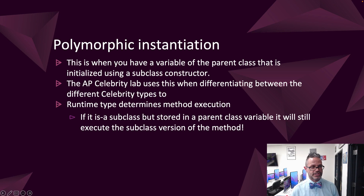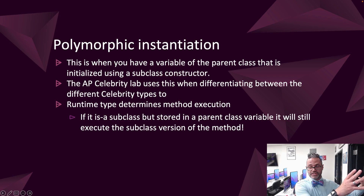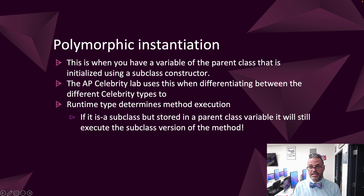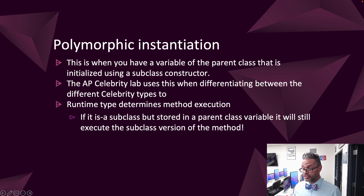Polymorphic instantiation is when you have a variable of the parent class that's initialized using a subclass's constructor. For example, in the AP Celebrity Lab inside the AP Computer Science Lab, we differentiate between different types of celebrity: we have a Celebrity base type and then a Literature Celebrity, a Cartoon Celebrity, a Sesame Street Celebrity, and so on. You can hold all of those in an ArrayList of the base type, and you can pull anything out of that list into a parent-class-level variable, but the subtype information still runs. The runtime determines method execution — if a subclass stores a parent class method, it'll still execute the subclass version. For subclass-only specific methods, you have to downcast appropriately.